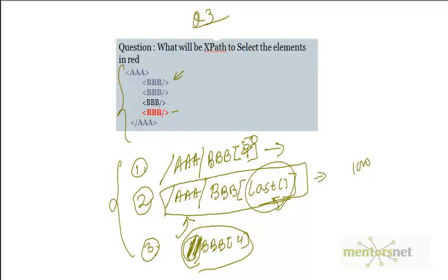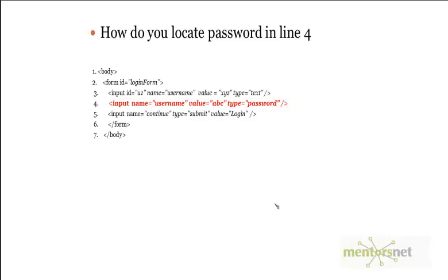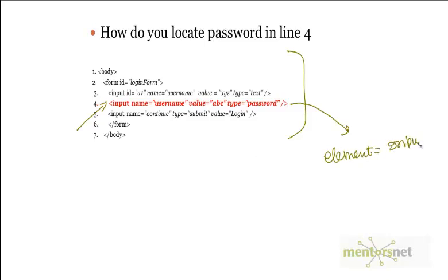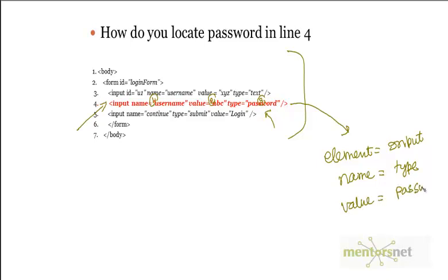Let's do one more example. Say you have a simple HTML and you want to locate an element using XPath. You see this input tag — the element name here is input. Inside that element we have multiple attributes: attribute number 1, attribute number 2, attribute number 3. Each attribute has a name-value pair.